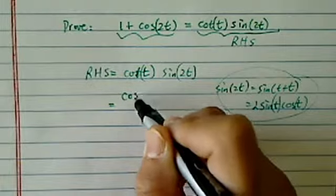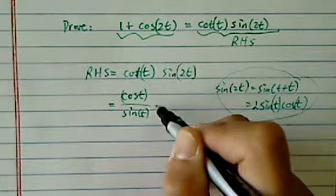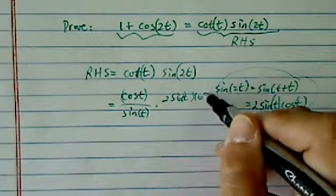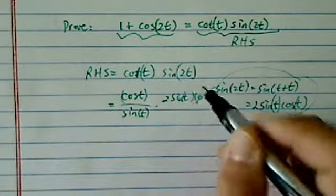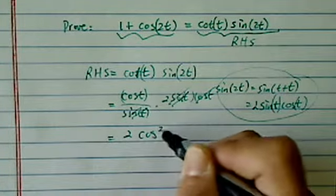Cotangent of t by definition is cosine of t on top divided by sine of t, and then times twice of sine of t cosine of t. Obviously sine gets canceled. I end up with twice of cosine squared of t.